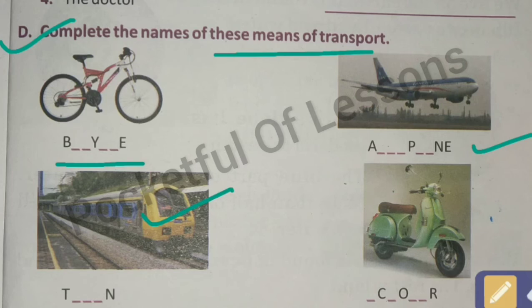Next is train - the spelling of train is T-R-A-I-N. Next is scooter - the spelling is S-C-O-O-T-E-R.